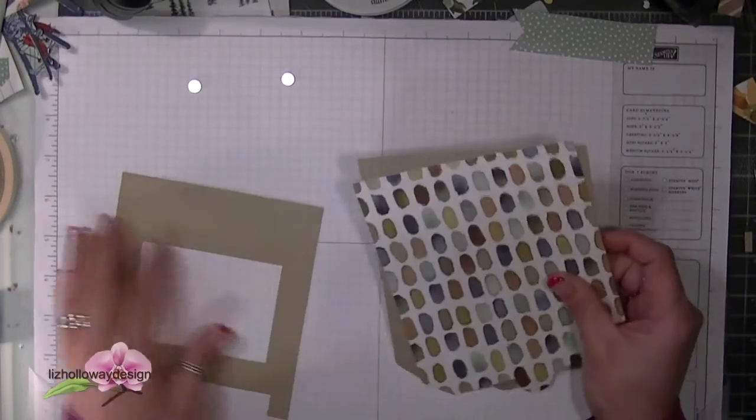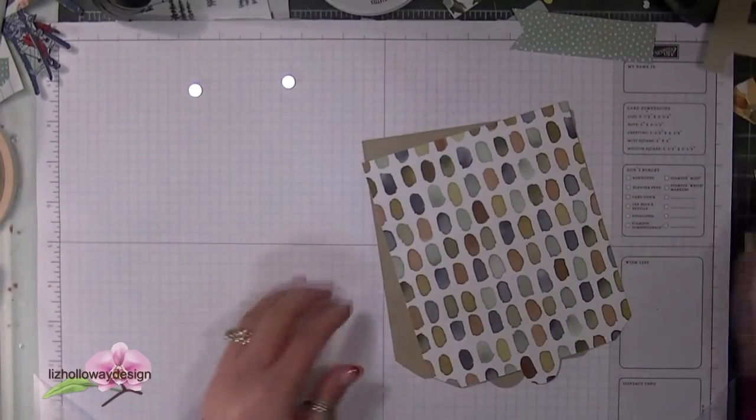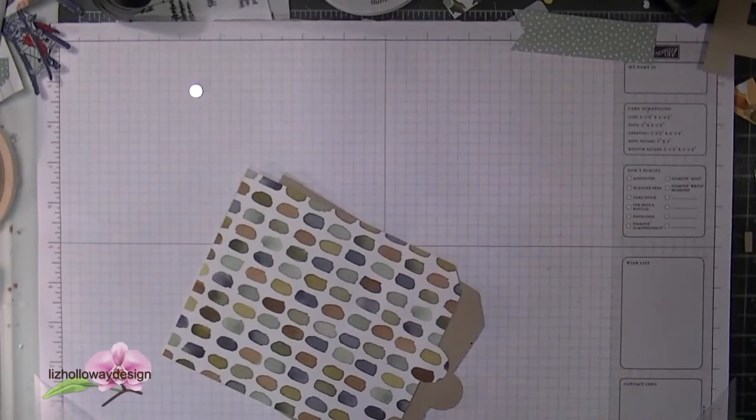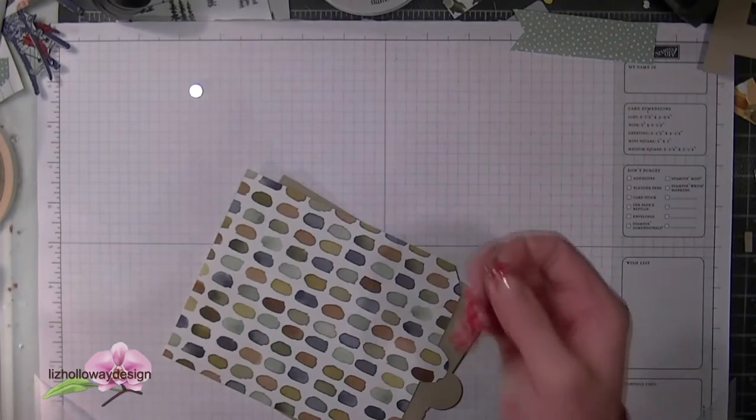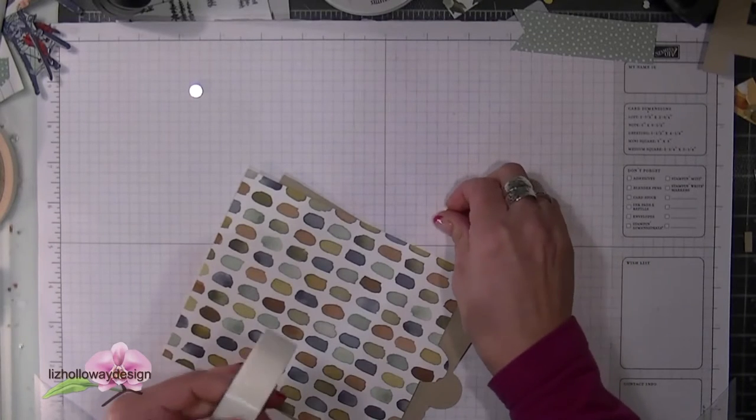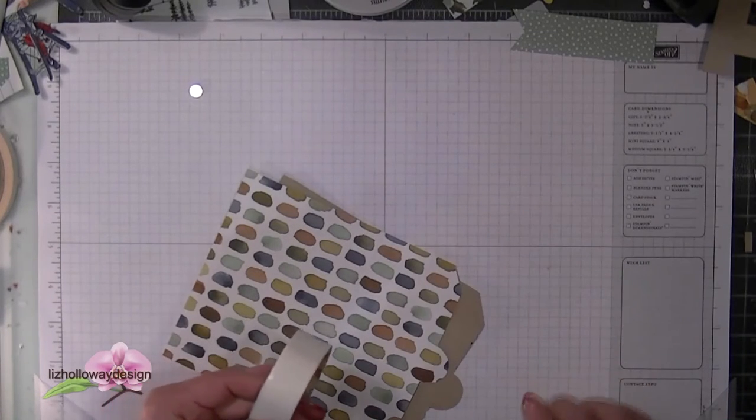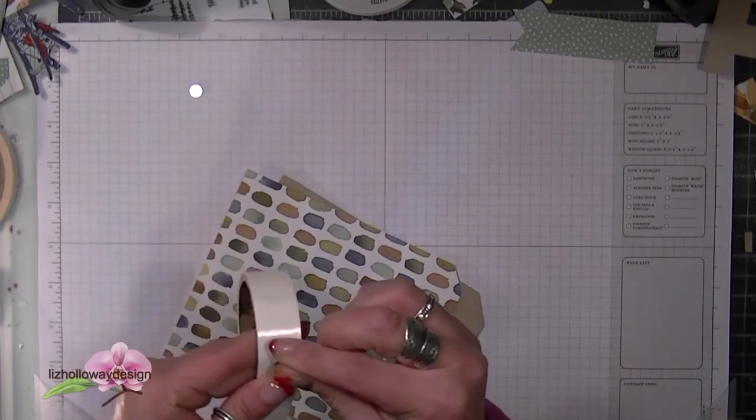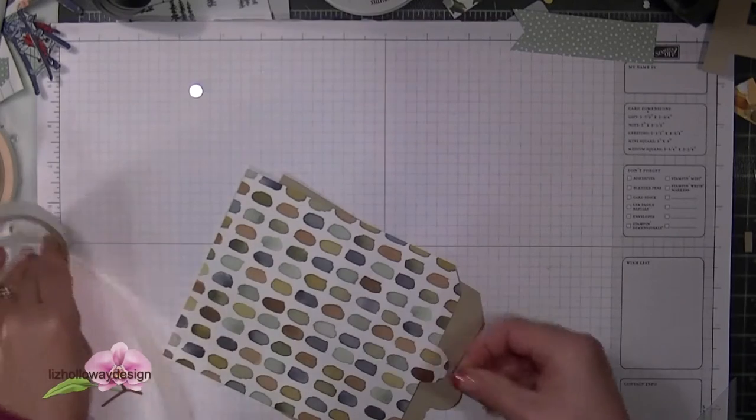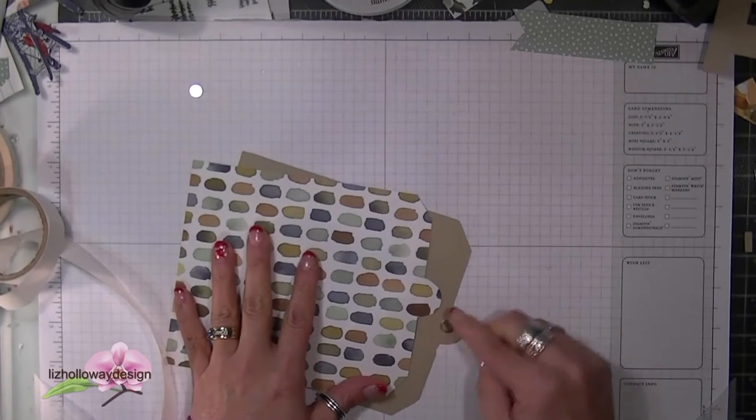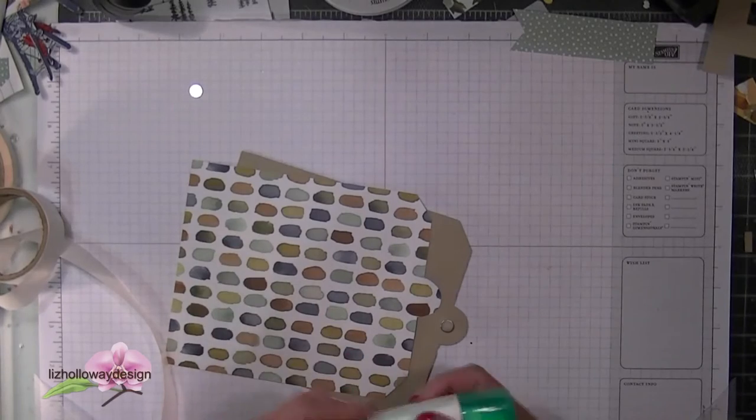Let's get started on building the You Got Mailbox. For the top of the mailbox you may need to cut the designer series paper by hand if you have words on the pattern paper. Once you got that cut out, you're going to take your magnetic buttons - I will put a link as to where I got these magnets but you can use any magnets from your crafting store. I'm just taking my glue dots and applying it right onto the center of that latch.